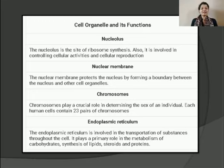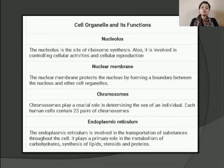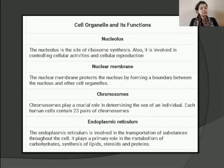The chromosome plays a very important and crucial role in determining the sex of an individual. In human cells, there are 23 pairs of chromosomes.